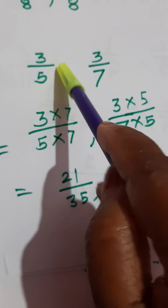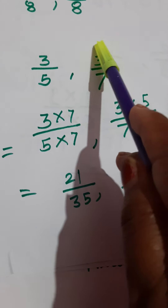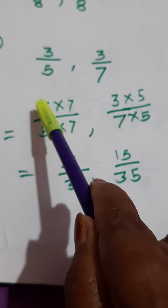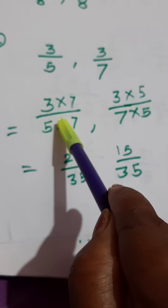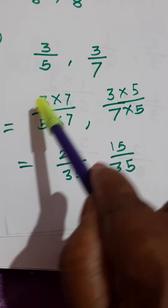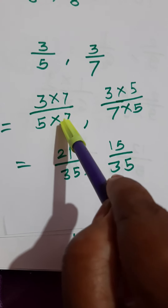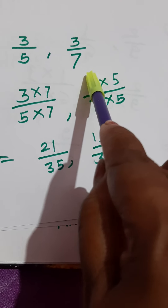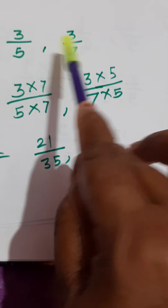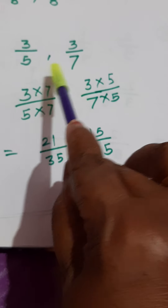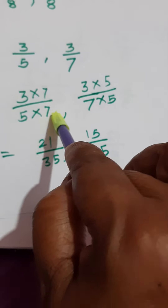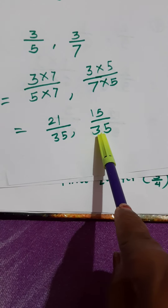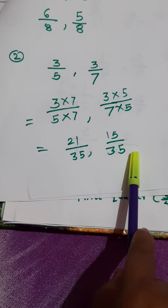Multiply the first fraction by the second denominator and multiply the second fraction by the first denominator. So 3 upon 5, multiply by 7 over 7. And write down the second fraction 3 upon 7, multiply by the first denominator, that is 5 over 5. So: 3 sevens are 21, 5 sevens are 35, 3 fives are 15, and 7 fives are 35. Now they are like fractions. Understood?